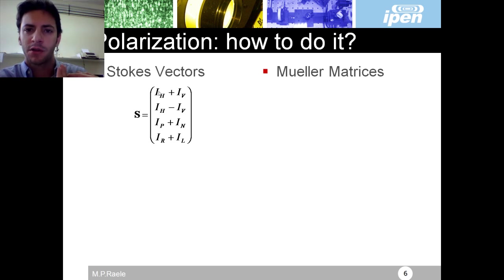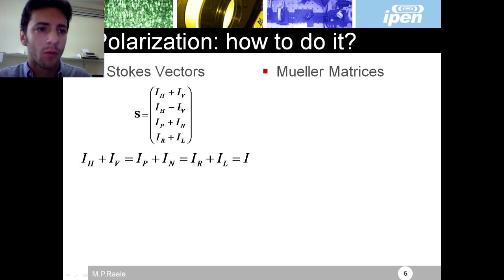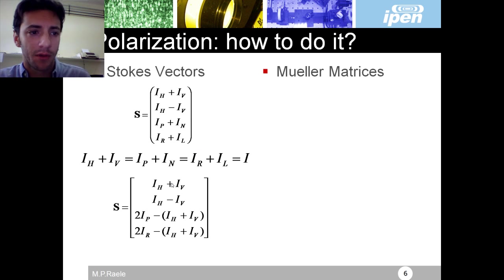Then using these relations, I can decrease my number of measurements from one, two, three, four, five, six to only four, because I can write two of them as a combination of other two.